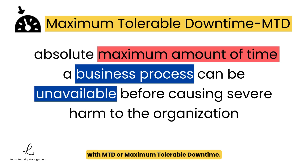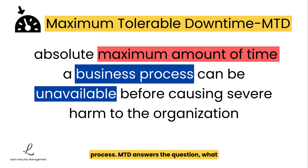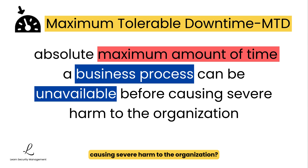Let's start with MTD, or Maximum Tolerable Downtime. This is arguably the most important metric and should be determined first in your planning process. MTD answers the question: what is the absolute maximum amount of time a business process can be unavailable before causing severe harm to the organization?